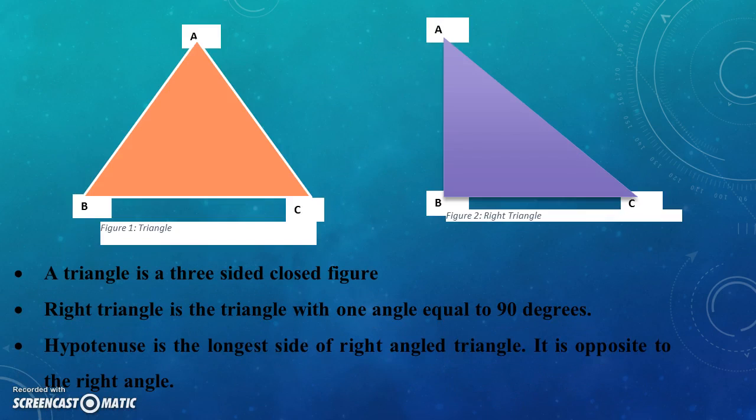We will stop here and recap what we have learned so far. We learned that a triangle is a closed figure that has three sides and three angles and that the sum of internal angles of a triangle must equal 180 degrees.